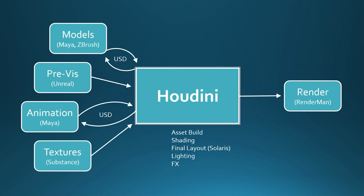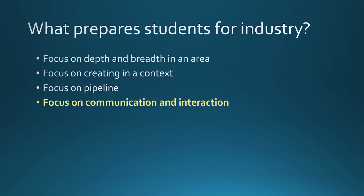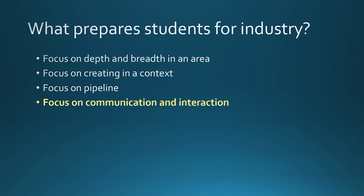Houdini can be a central hub of a pipeline and lets our students learn some USD, lets them output renders to Mantra and to RenderMan, and pull in stuff from Maya and ZBrush. We even get to previs some in Unreal and bring over what we've set up there to Houdini — the animation and textures. There's just so much that allows students to prepare stuff to be handed down the line and used months later in a pipeline without breaking things as it moves through. Houdini has been very stable for allowing scripting and adaptation and bringing multiple outputs all together. This is also very nice because it really encourages students to communicate and interact with each other and understand how different pieces of the pipeline work together.